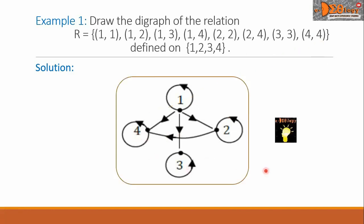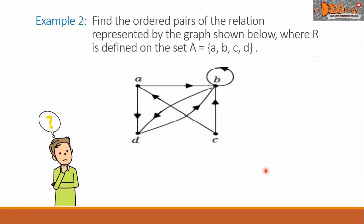This is now the final answer for Example 1. Example 2: find the ordered pairs of the relation represented by the graph shown below, where R is defined on the set A with elements A, B, C, and D.